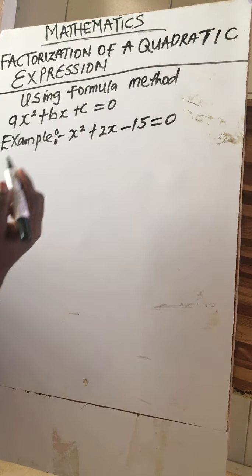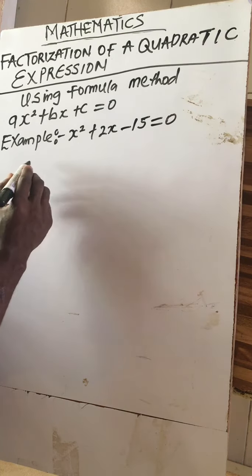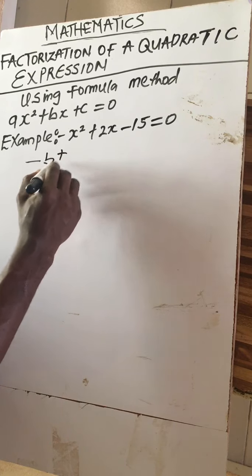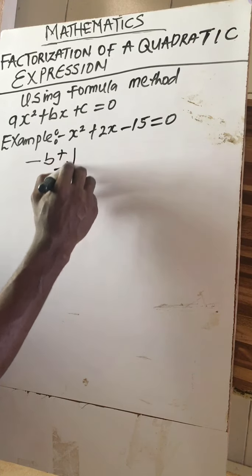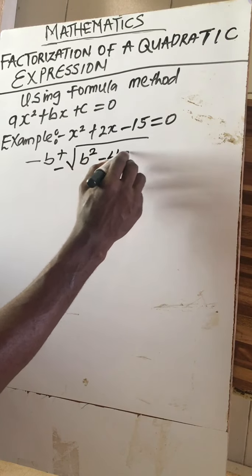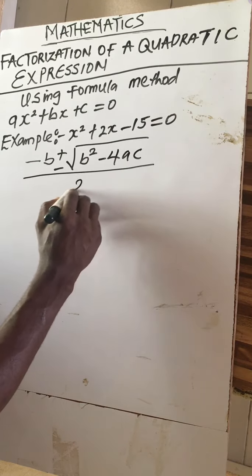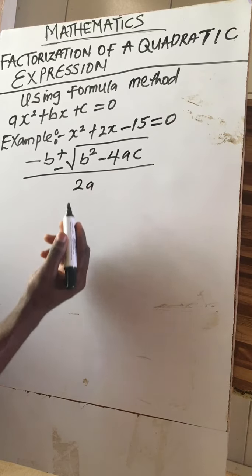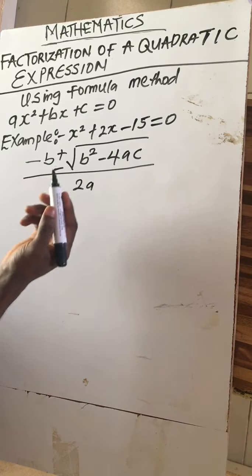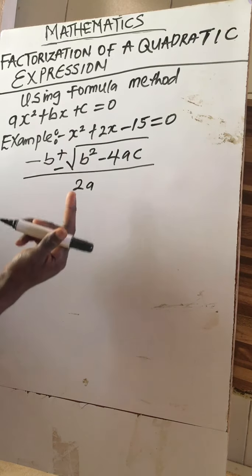The quadratic formula is: x equals minus b plus or minus the square root of b squared minus 4ac, all over 2a. This is the formula method, and we'll be solving this equation using it.